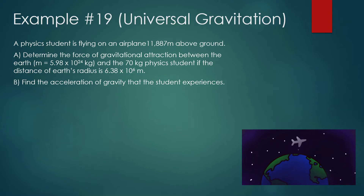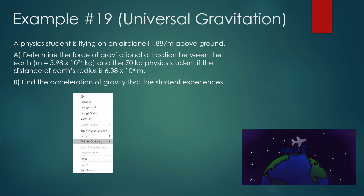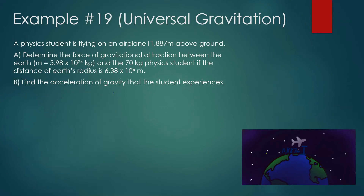A physics student is flying on an airplane 11,887 meters above the ground. Determine the force of gravitational attraction between the Earth (5.98 × 10²⁴ kg) and the 70-kilogram physics student, given that the Earth's radius is 6.38 × 10⁶ meters. We know the radius of the Earth, the mass of the Earth, and the mass of the physics student.